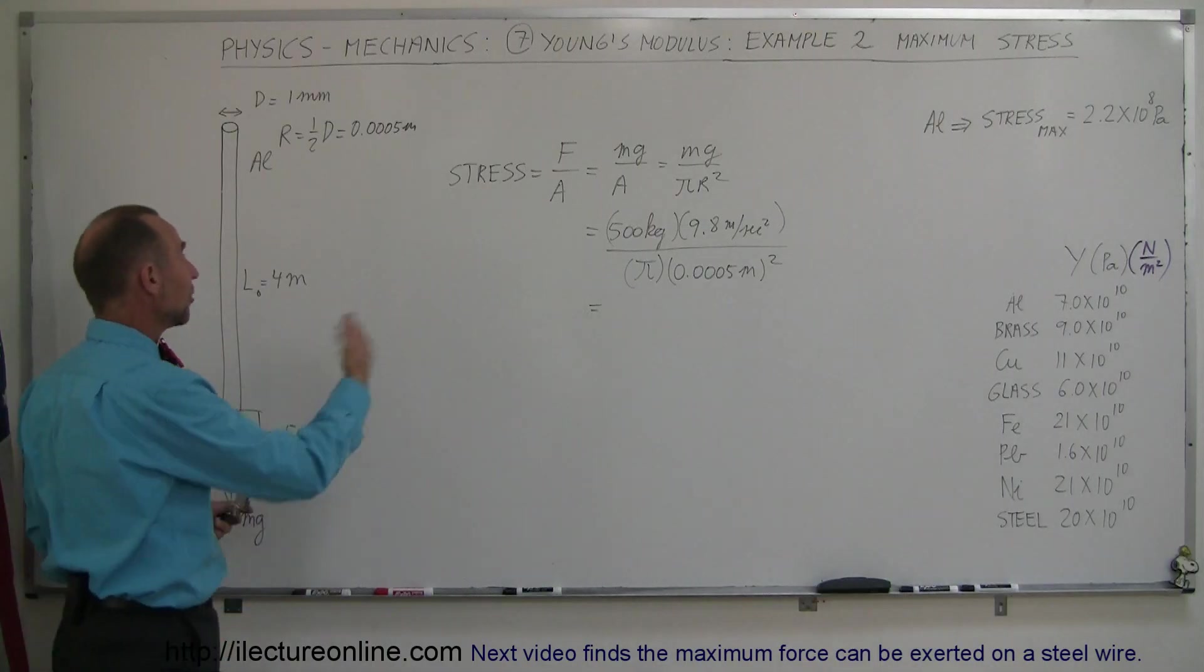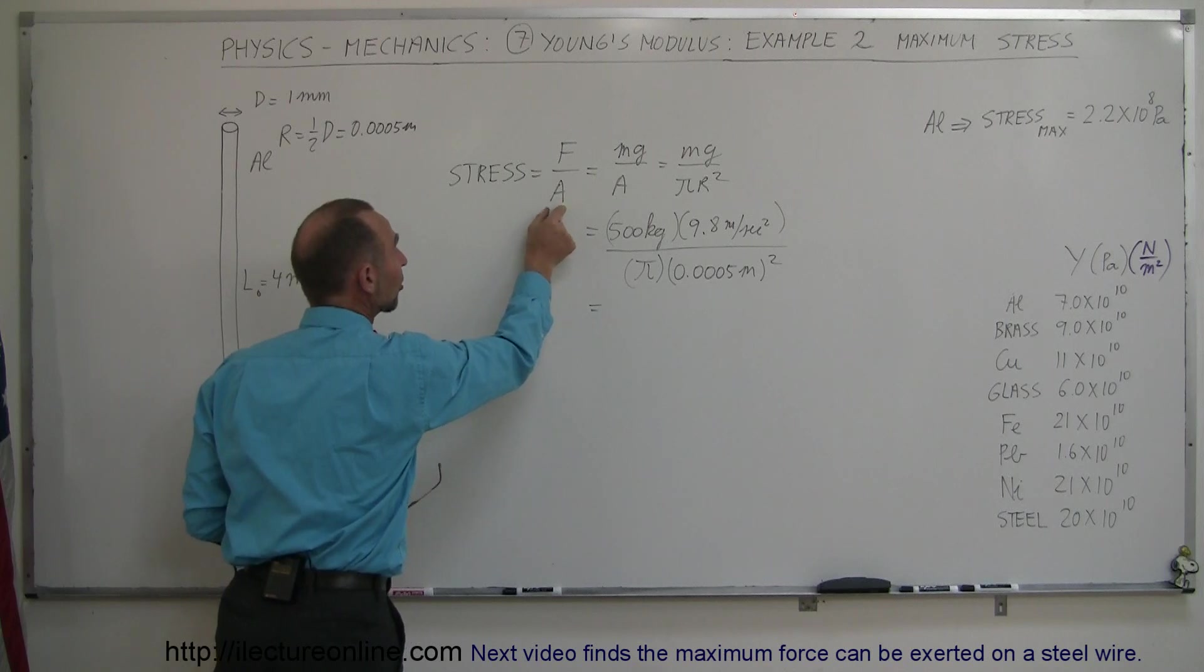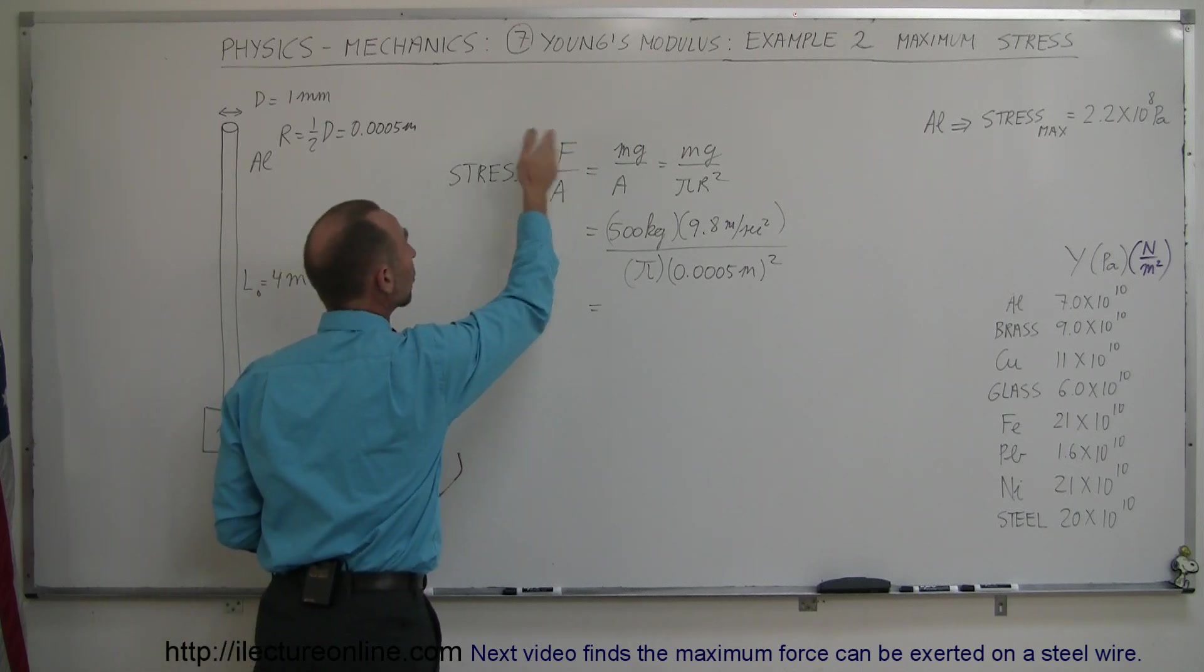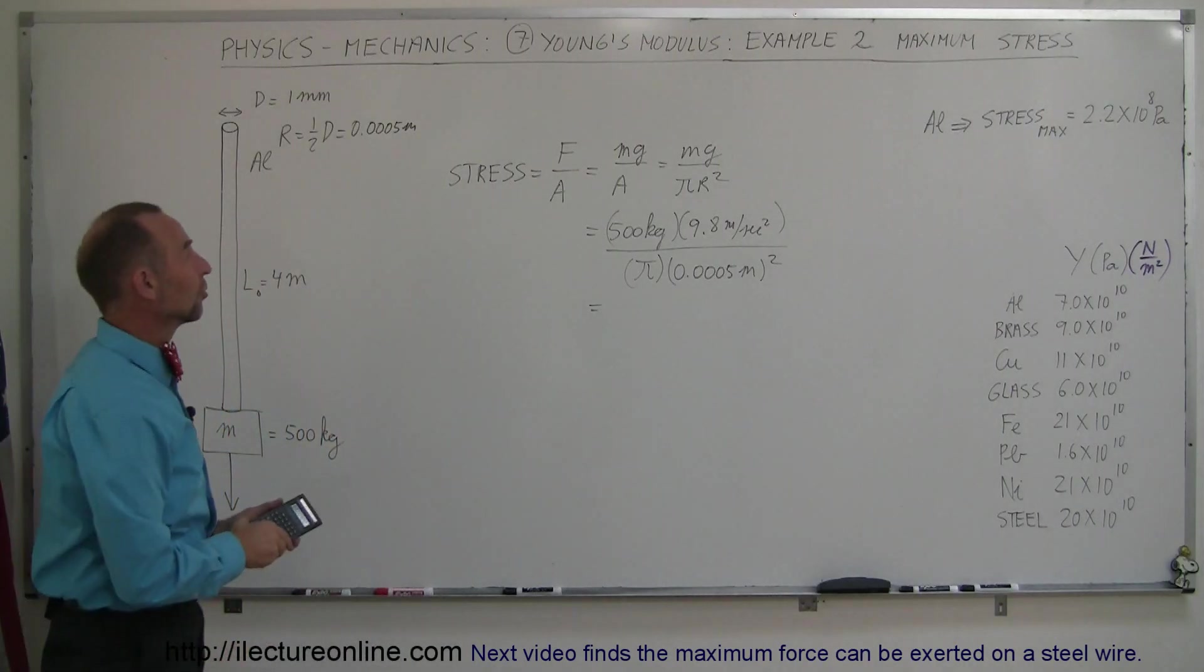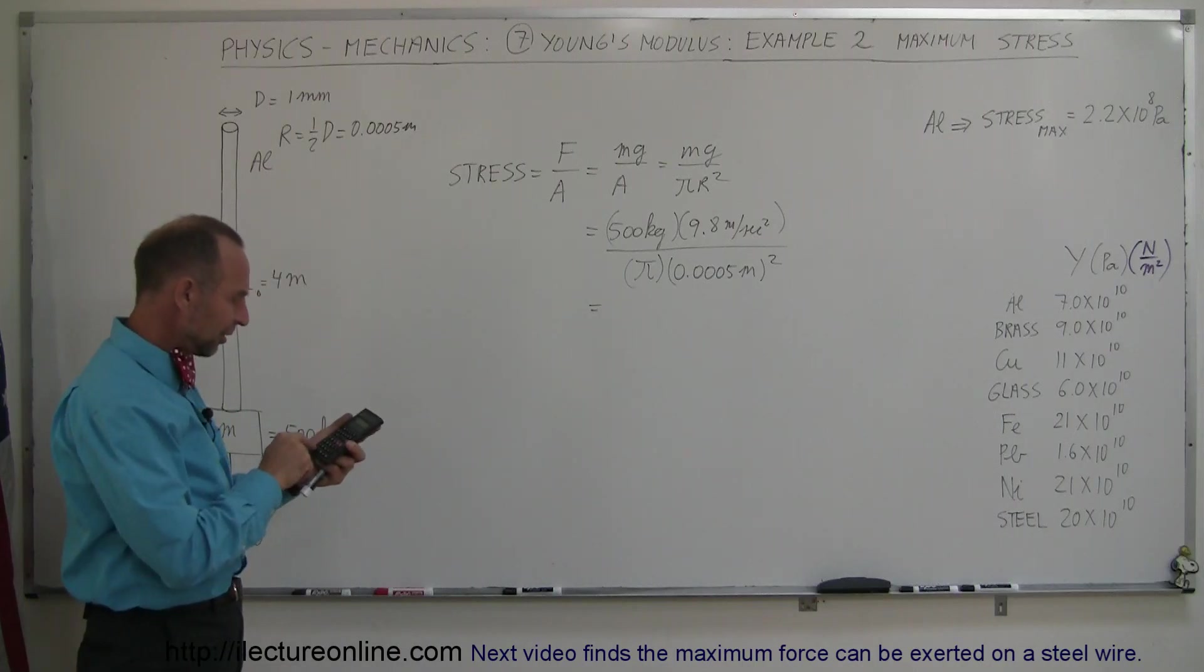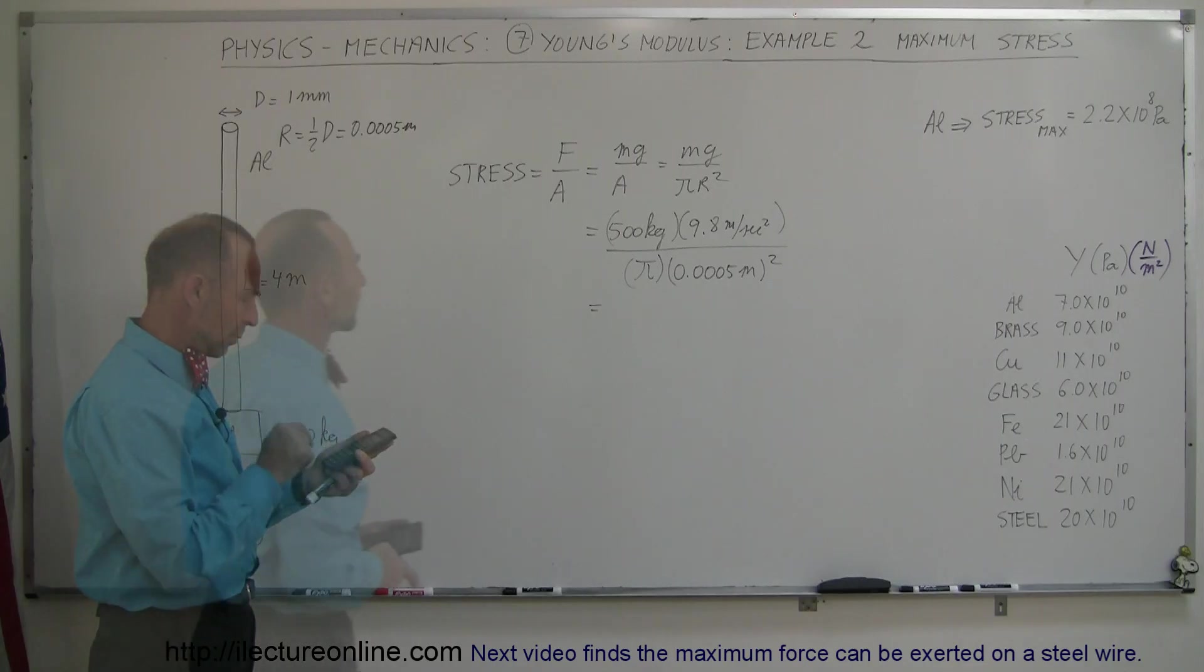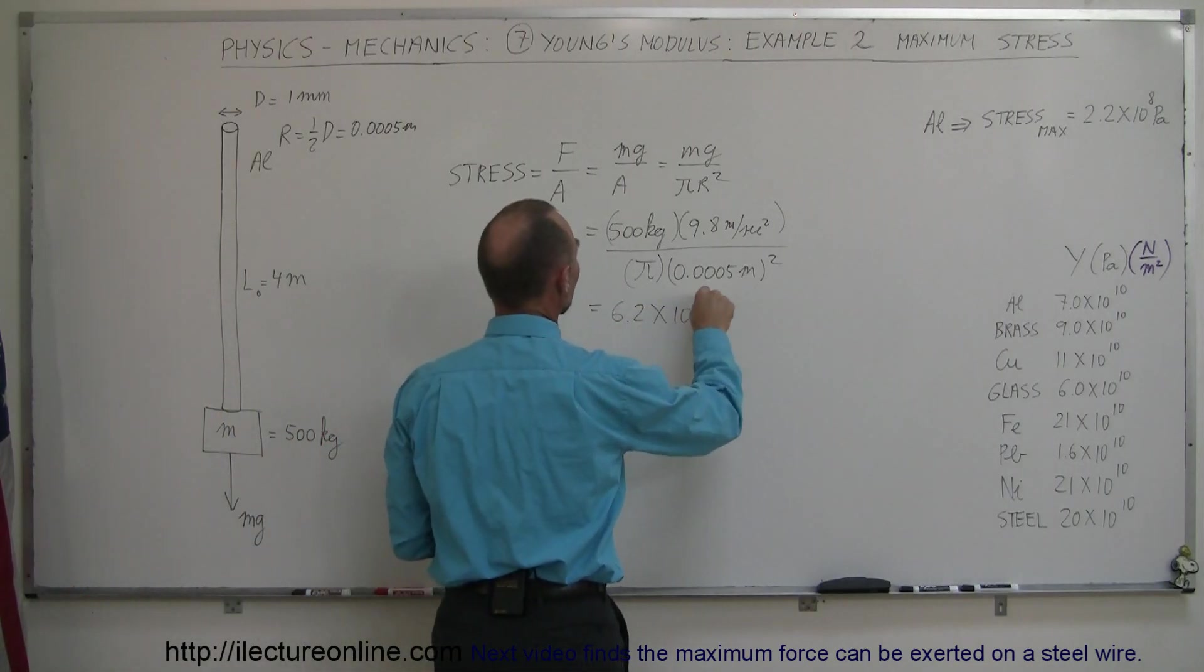Again, stress is a function of both the force and the cross-sectional area. A very small cross-sectional area would give us a really big stress. Just like a very large force would give us a really big stress. In this case, it's the cross-sectional area that determines that large stress on this wire. So 500 times 9.8 divided by pi and divided by 0.0005 squared equals... So this is equal to 6.2 times 10 to the 9th.